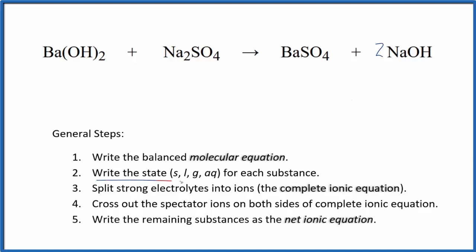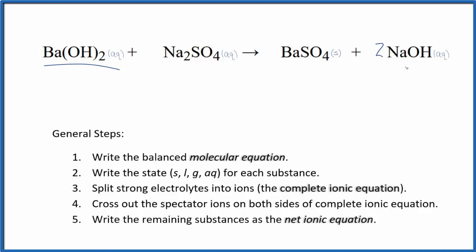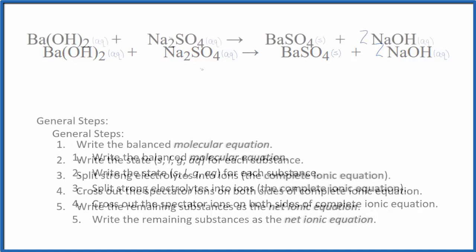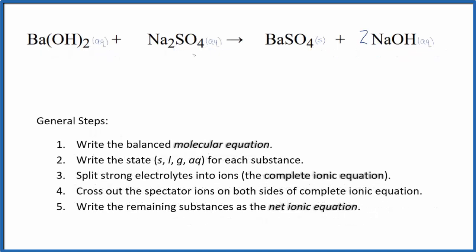Now we write the state for each substance. Both barium hydroxide and sodium hydroxide are strong bases, so we consider these strong electrolytes — they'll split apart into their ions. Compounds with sodium are very soluble, and quite often compounds with sulfate are soluble, with a few exceptions.